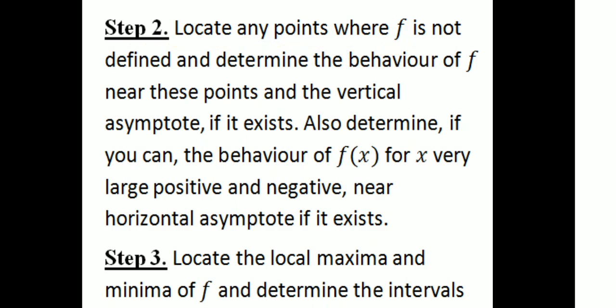Step 2: locate any point where f is not defined and determine the behavior of f near this point, and the vertical asymptote if it exists. Also determine, if you can, the behavior of f(x) for x a very large positive and negative number, near a horizontal asymptote if it exists. We will look at the graph as x approaches infinity and minus infinity, and check the value f approaches — that is the horizontal asymptote.